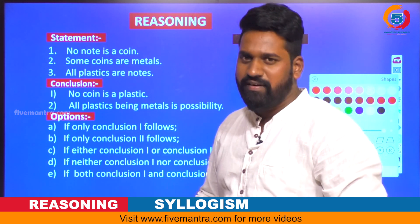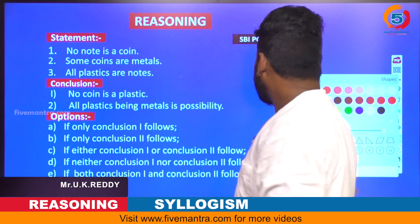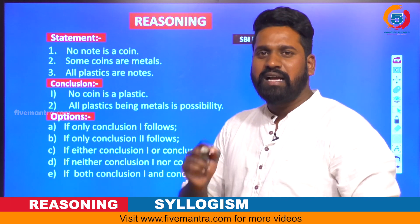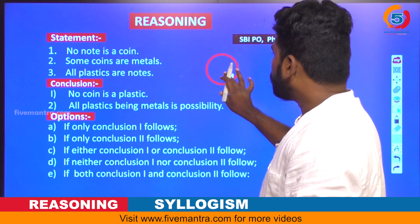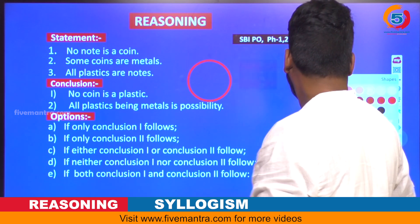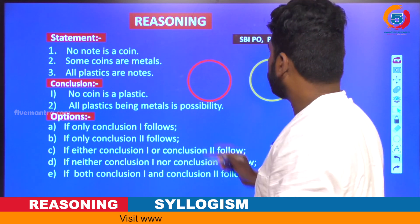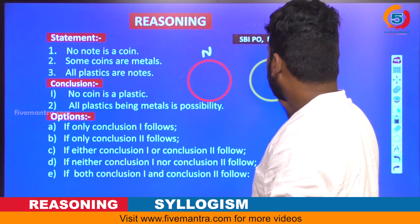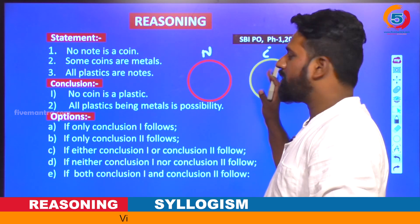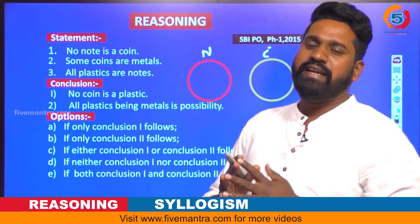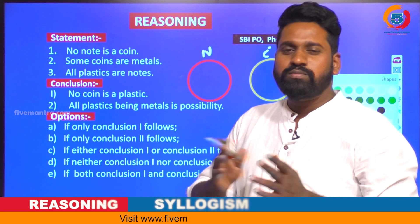To represent these three statements in a Venn diagram: for the first statement, no note is a kind, we draw two separate circles — one for note and one for kind — with no intersection. For the second statement, some kinds are metals, we draw the metals circle intersecting with the kinds circle.